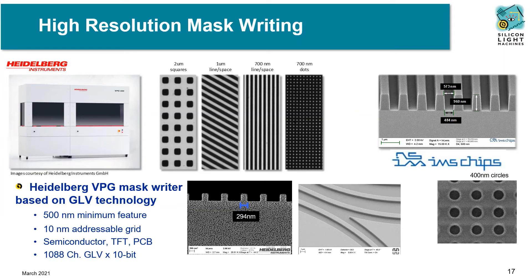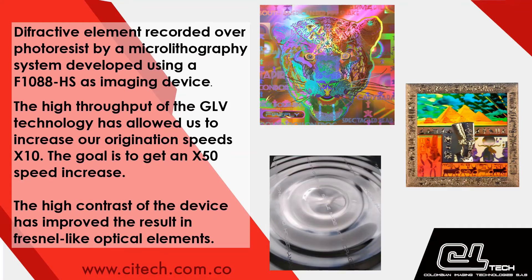On the left, we see examples of 2 micron down to 300 nm features on a 10 nm addressable grid from Heidelberg's VPG mask writer, as well as micron width curved channels. On the right, we see results from IMS chips, including 400 nm circles. Colombian Imaging Technologies uses the 1088 channel GLV in a direct-write micro lithographic system for holographic printing. With the GLV technology, their creation speeds have already increased by 10 times, with further improvements planned. High contrast and high bit depth with precise calibration enables products such as beautiful holographic labels and better performing diffractive optical elements.